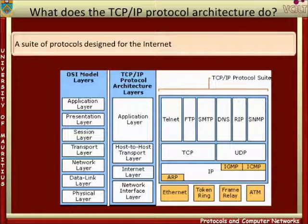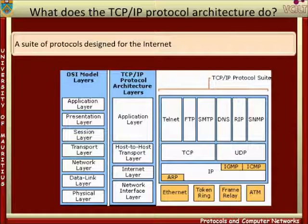The main protocol in the internetwork layer is IP, Internet Protocol, and the other protocols in the figure for this layer support the operation of IP. The network layer, or host-to-network layer, deals with the reliable transfer of data between nodes in a communication network. The protocols in this layer are not strictly within the TCP/IP protocol suite because they are controlled by other standards bodies and have uses outside the Internet context.